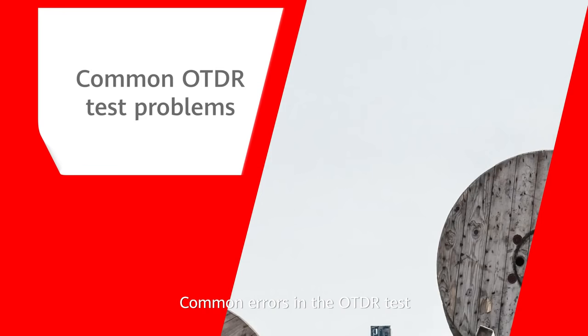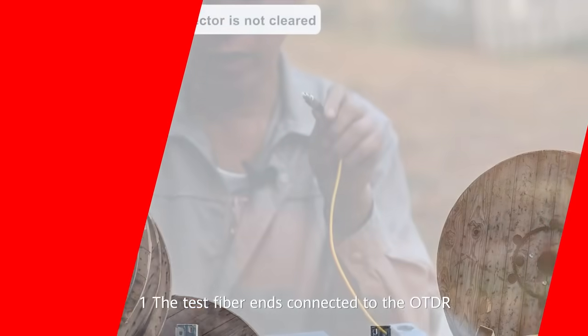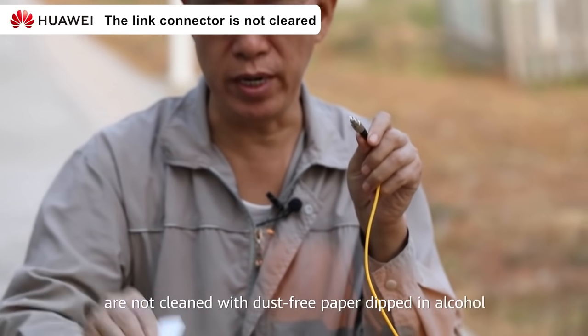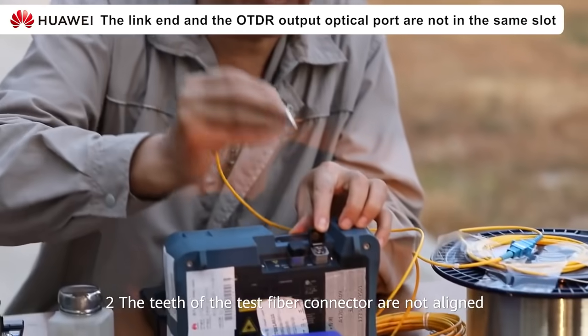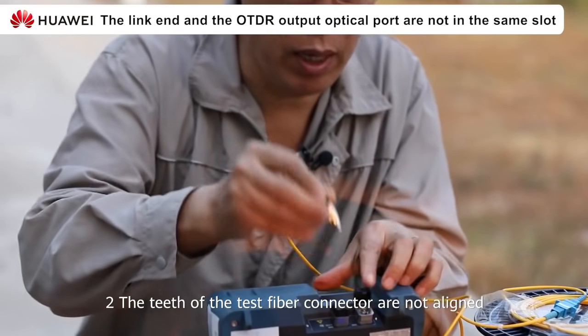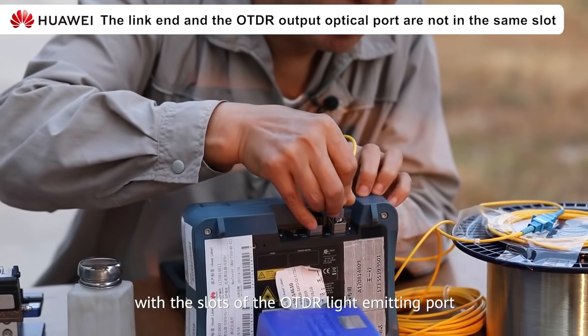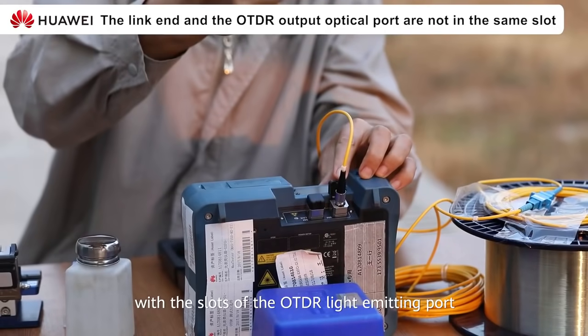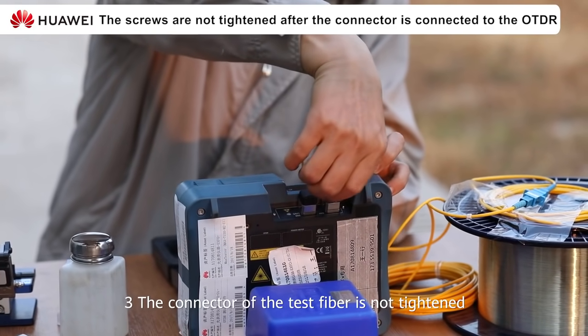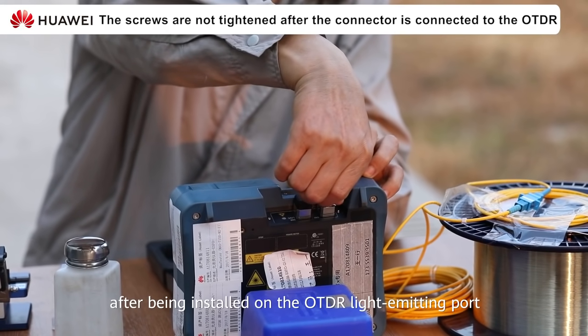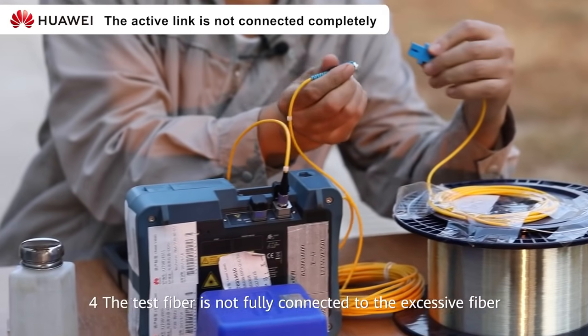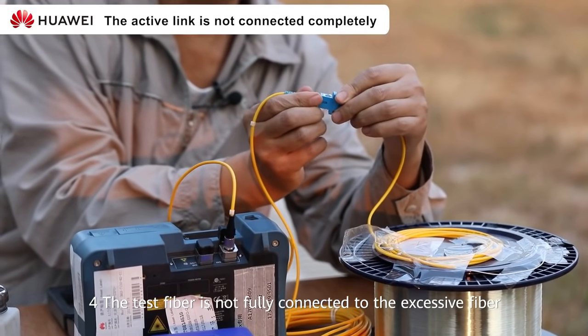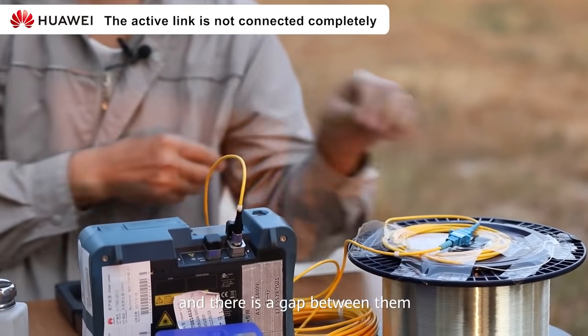Common Errors in the OTDR Test. 1. The test fiber ends connected to the OTDR are not cleaned with dust-free paper dipped in alcohol. 2. The teeth of the test fiber connector are not aligned with the slots of the OTDR light emitting port. 3. The connector of the test fiber is not tightened after being installed on the OTDR light emitting port. 4. The test fiber is not fully connected to the excess fiber and there is a gap between them.